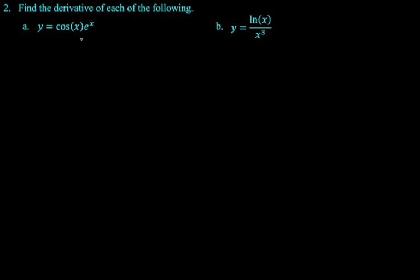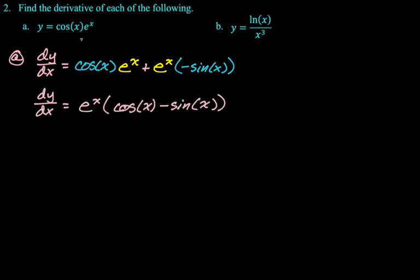Alright, so that's a product. So I'm going to need to use the product rule. So dy/dx is, it's going to be first cosine, derivative of the second, derivative of e^x is e^x plus second, which is e^x, derivative of the first. So the derivative of cosine is negative sine. Then we just want to clean this up. There's really not much you can do. You take an e^x out of everything. So I'm going to say dy/dx is e^x quantity cosine(x) minus sine(x).